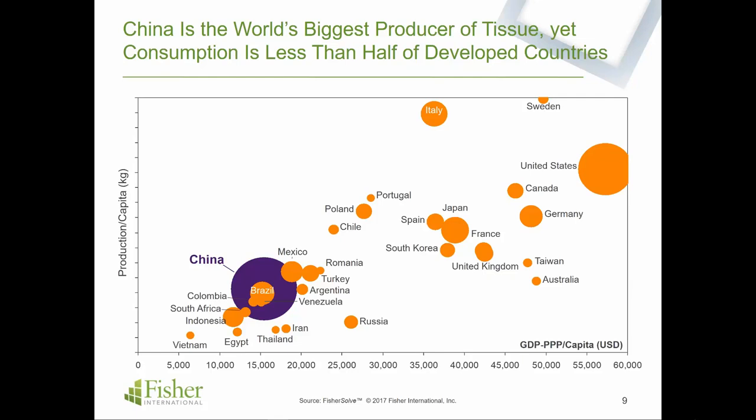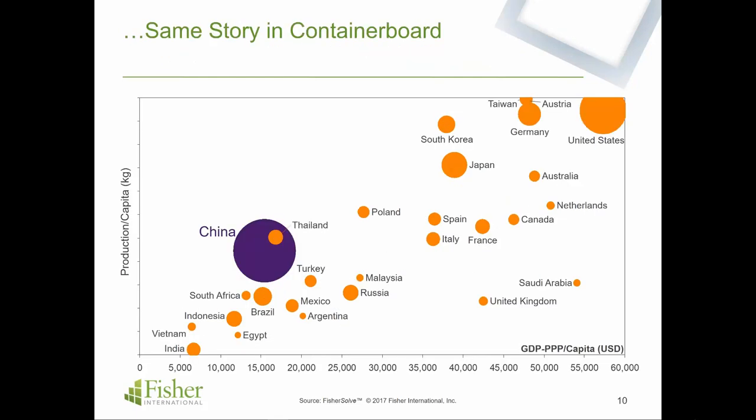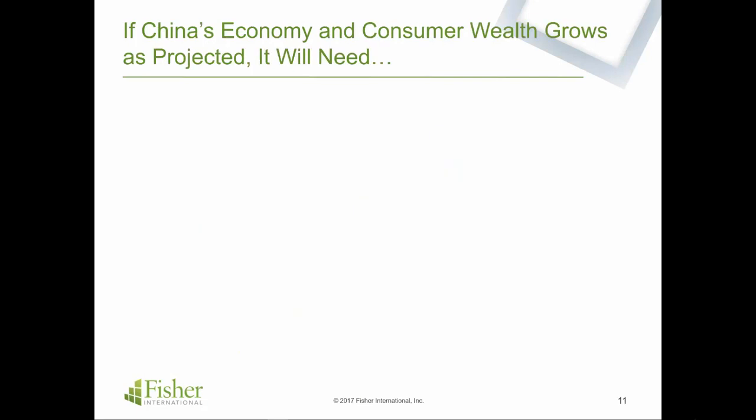We're going to hear the same story for containerboard, which is another growing grade worldwide. This similar chart shows the same picture as tissue: China, despite already being the world's largest market for containerboard, is still at half the consumption of more developed countries. It's going to grow. As it grows, China is going to need more tissue and packaging machines to feed that growth.